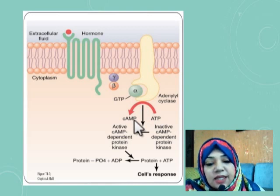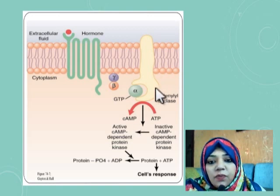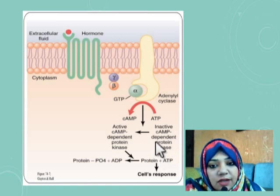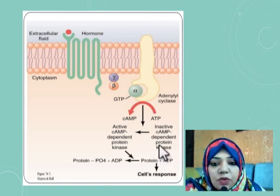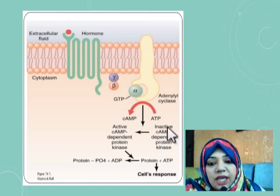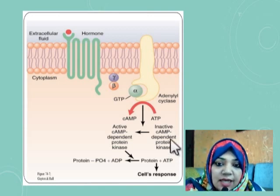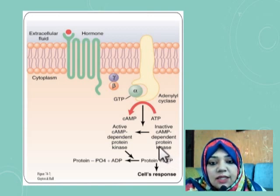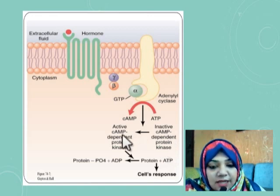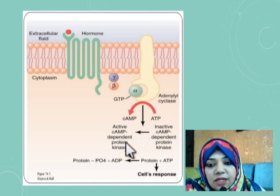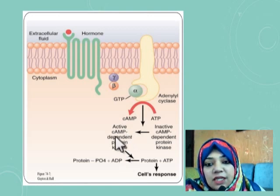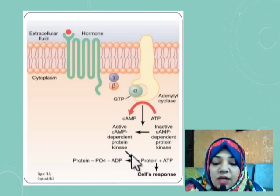Remember that protein hormones use the second messenger system — the adenylyl cyclase/cyclic AMP second messenger system. So ATP is converted to cyclic AMP. Another very important intracellular enzyme is protein kinase, which is cyclic AMP dependent. This means the protein kinase only becomes activated when there is cyclic AMP present. So cyclic AMP activates this inactive protein kinase, making it an active cyclic AMP dependent protein kinase.